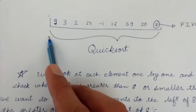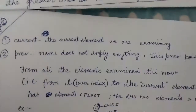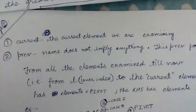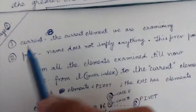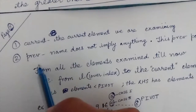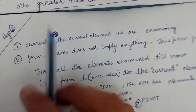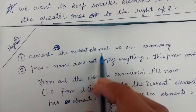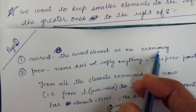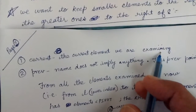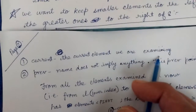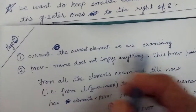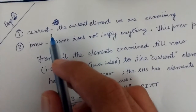As we look at all the elements one by one, we maintain two pointers, or two indexes. The first index is the index of the current element — the element we are currently examining, meaning we are checking whether it is greater than or less than the pivot element.